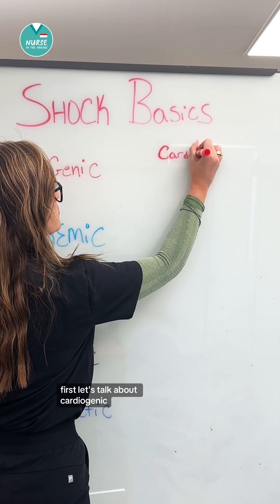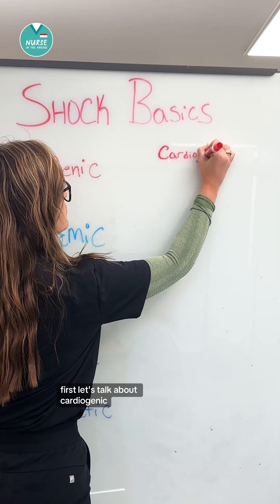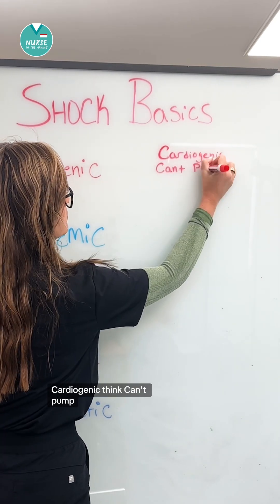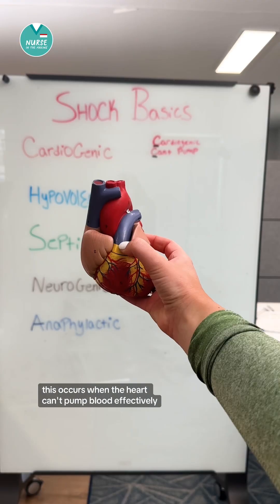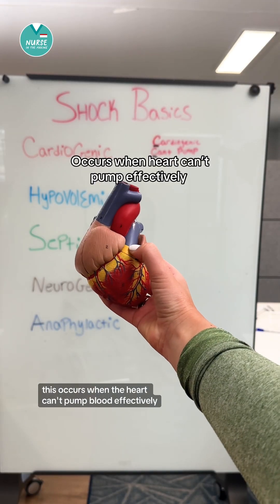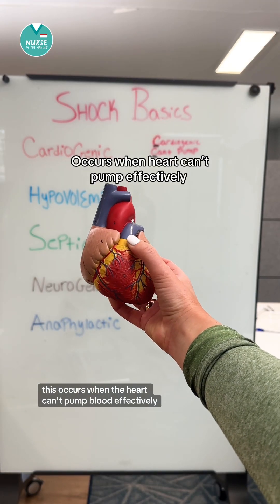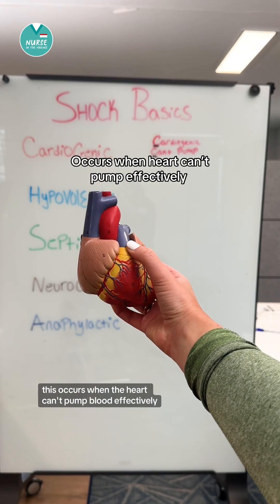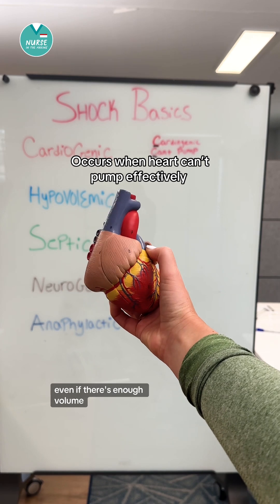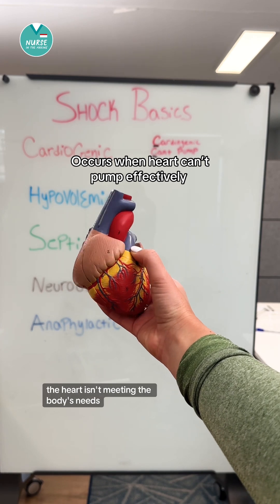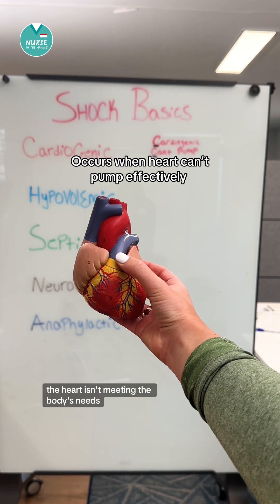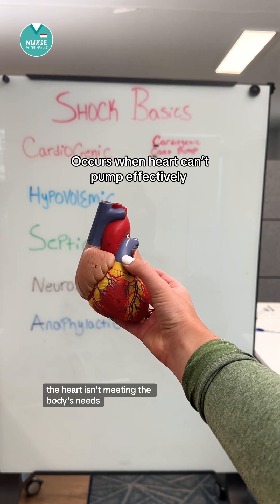First, let's talk about cardiogenic. Cardiogenic — think can't pump. This occurs when the heart can't pump blood effectively. Even if there's enough volume, the heart isn't meeting the body's needs.